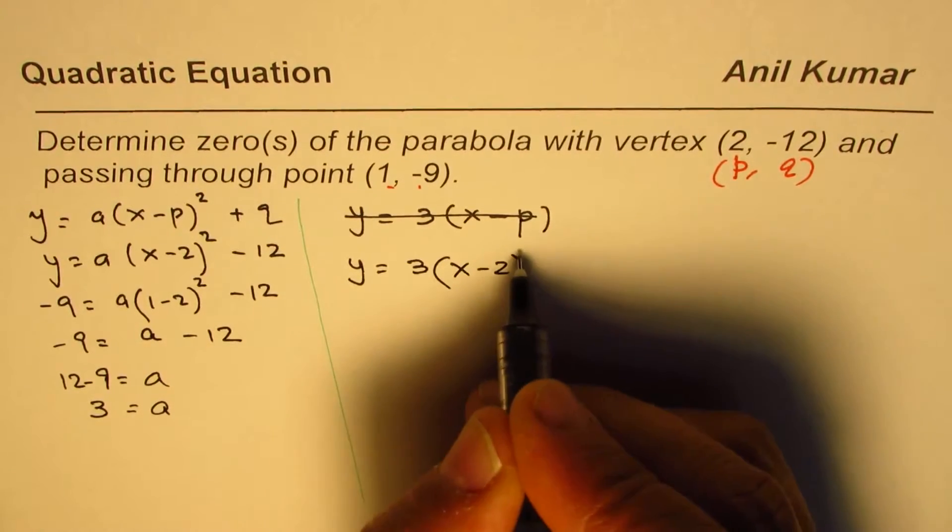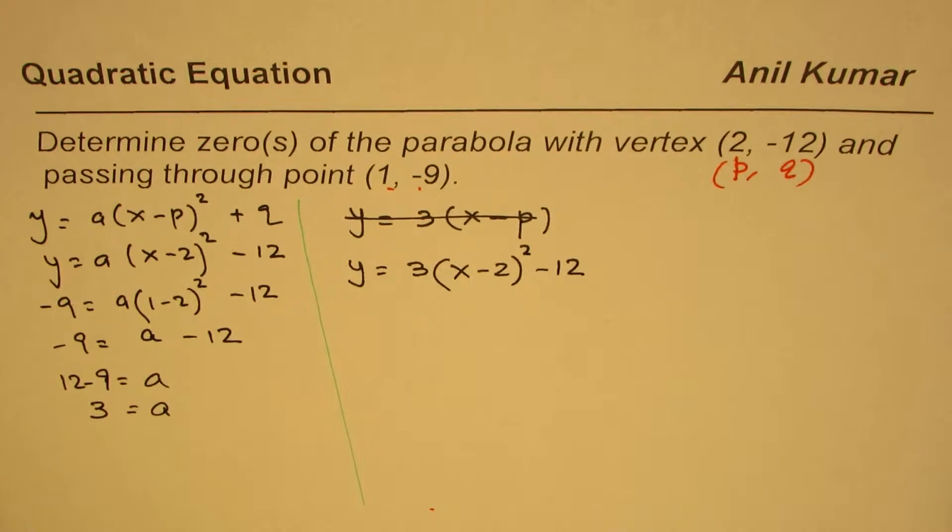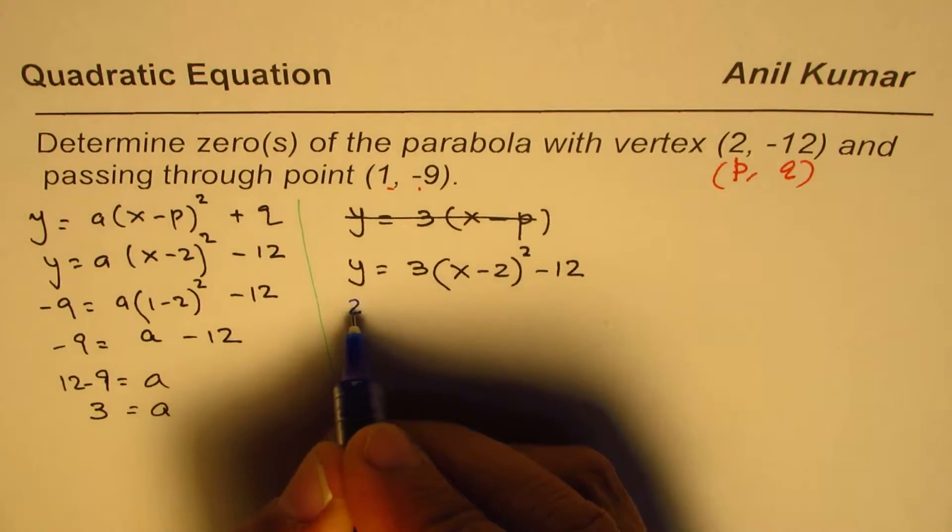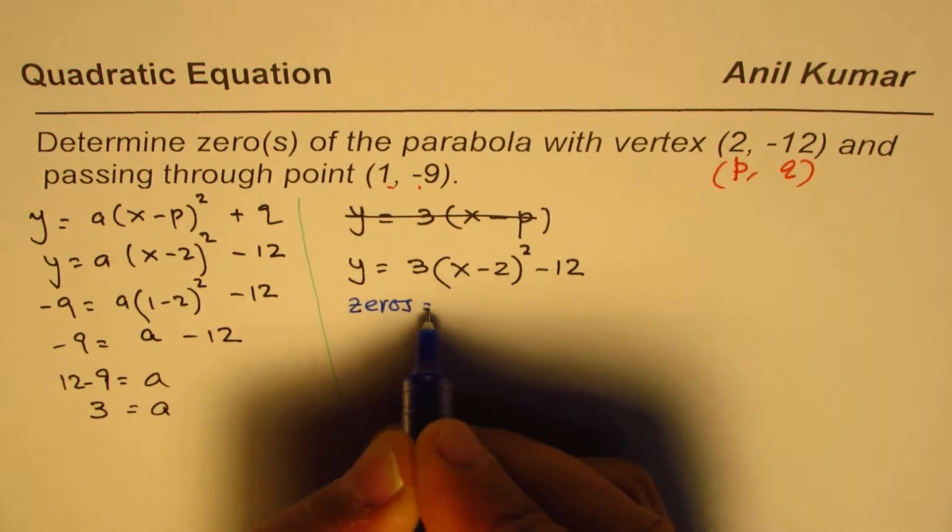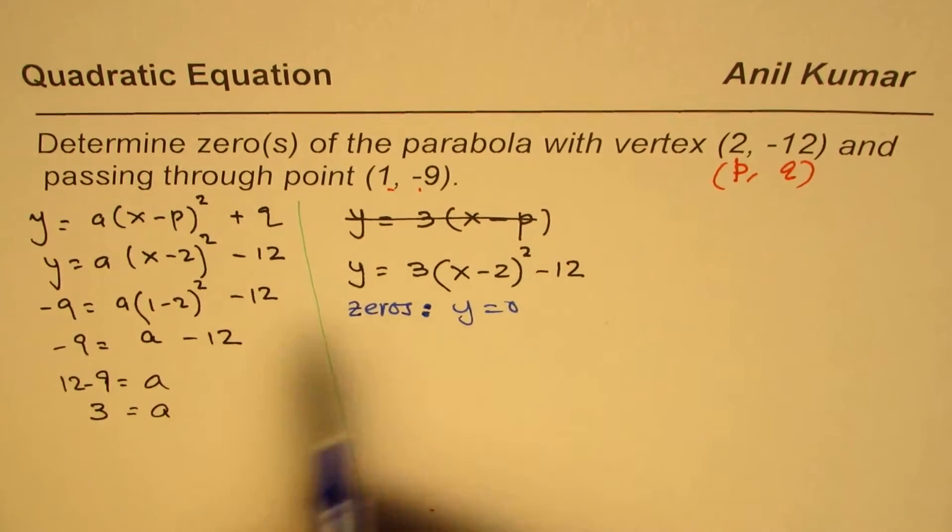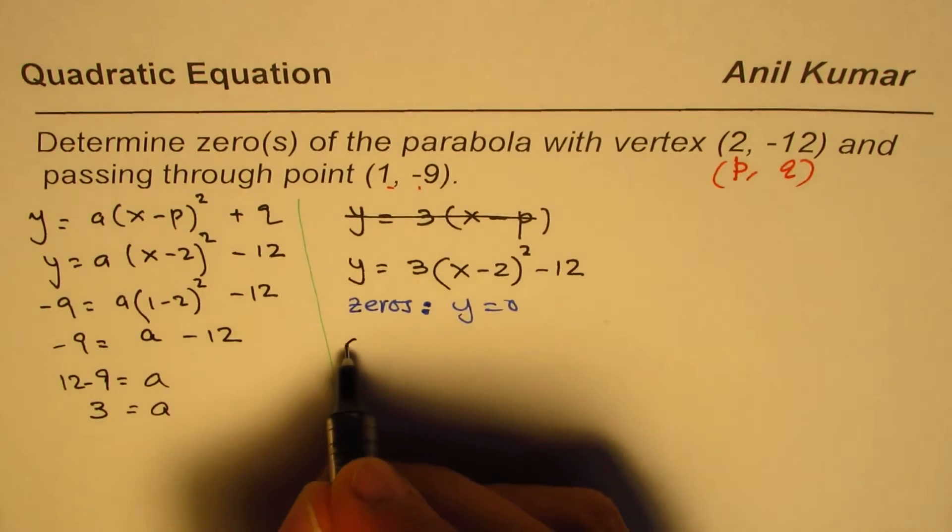Now the question is, how to find zeros from this equation? You can pause the video and answer the question, then look into my suggestion. To find zeros means that the y value equals zero. So we have to solve this equation by placing y = 0.